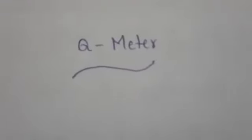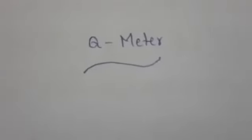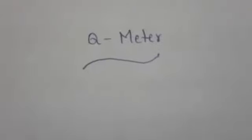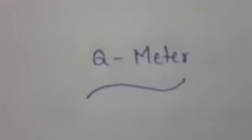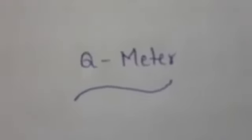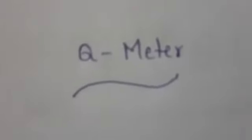Welcome back students. Now we are going to discuss the Q meter. It is defined as the instrument which measures some of the electrical properties of coils and capacitors. The Q meter depends on a series resonance circuit.